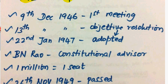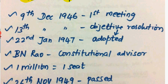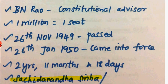On 22nd January 1947, the Objective Resolution was passed, which became the Preamble of the Constitution. The Constitutional Advisor was B.N. Rau, who was confirmed as the Constitutional Advisor.